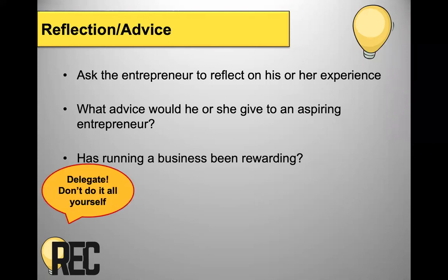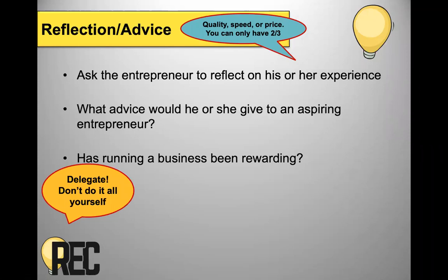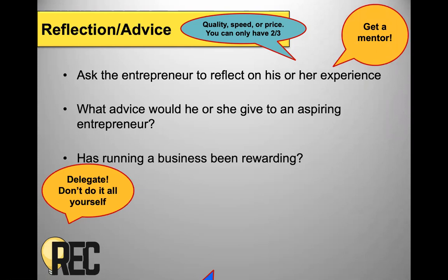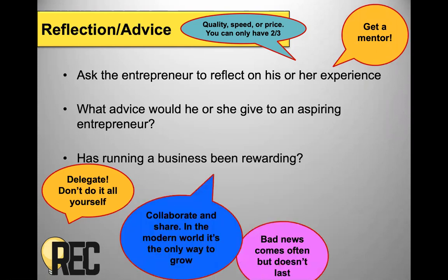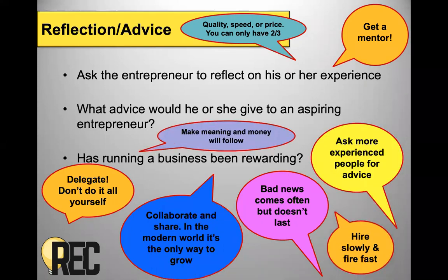This advice section is my favorite part of the paper. You get some great advice — things like: don't do it all on your own; quality, speed, and price — you can only ever have two out of three; get a mentor; collaborate; bad news comes often but it doesn't last; ask people more experienced than you for advice; hire slowly, fire fast; make meaning and money will follow. All of these are pieces of advice I've gotten from papers I've read — such invaluable information from people who've been there and done that.